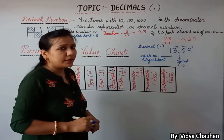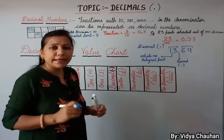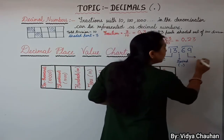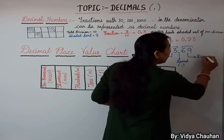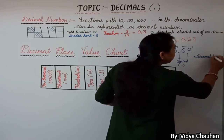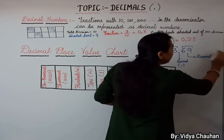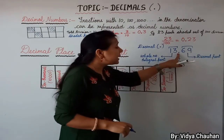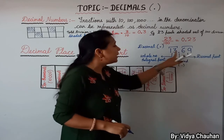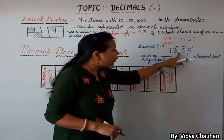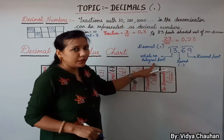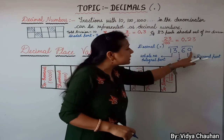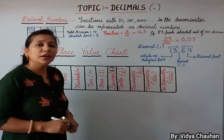The portion on the right hand side of the decimal is called the decimal part of the number. So the decimal sign divides the number into two portions: the number before the decimal is the whole number or integral part, and the values after the decimal are called the decimal part of the number.